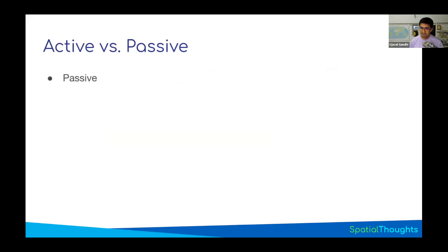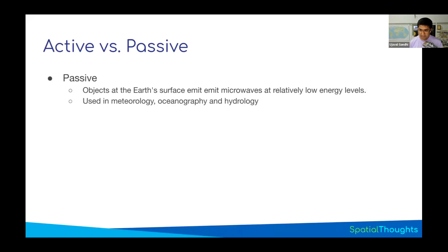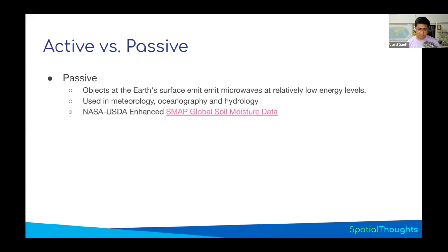The two basic classes are active and passive. Passive microwave sensors look at the microwave radiation emitted by the surface. The Earth's surface emits very low levels of microwave radiation, but one of the most important applications is soil moisture detection — the microwave radiation emitted is proportional to the amount of soil moisture present. Since the radiation is very low, you need a very large area to collect enough information, so passive sensors like SMAP operate at around one kilometer resolution.